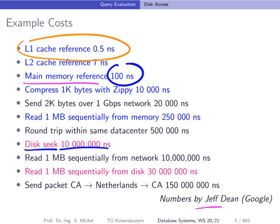If you look at these 10 million nanoseconds, which essentially is 10 milliseconds, for one certain access to the disk, compare this to reading one megabyte from a disk sequentially, which costs 30 milliseconds. So it's a factor of three slower, yet here we're reading quite a lot of data as opposed to accessing only one block. We want to see where this comes from, and particularly how to benefit from this observation.